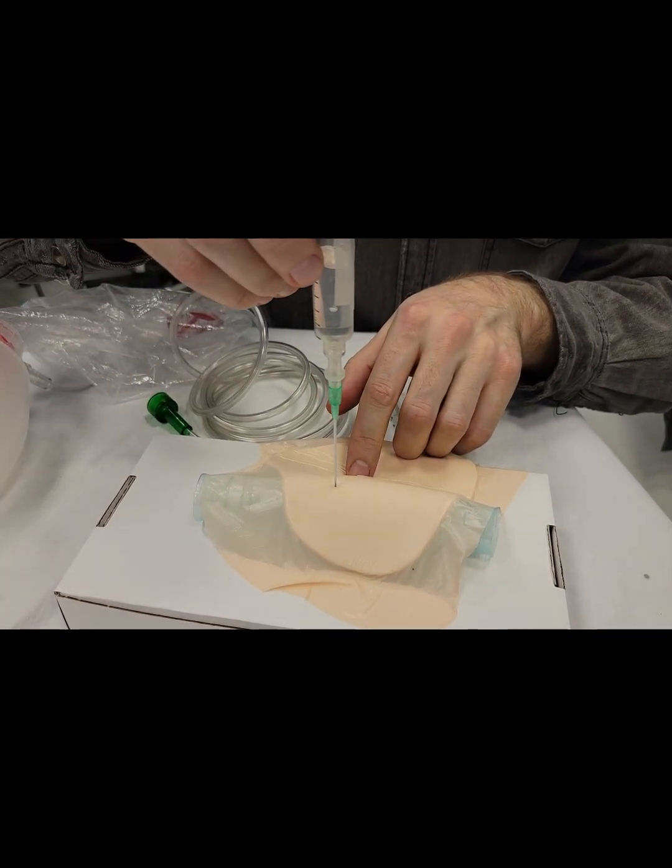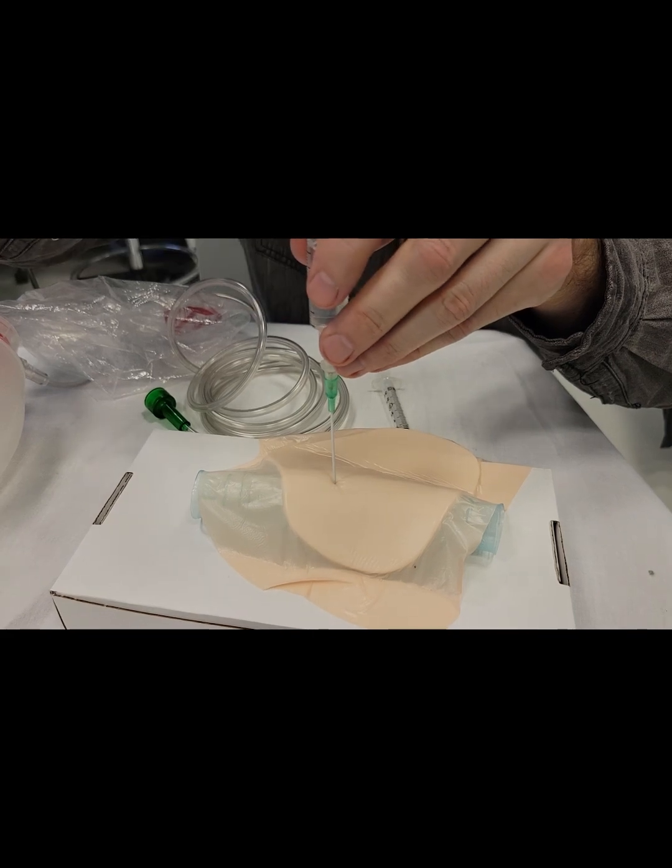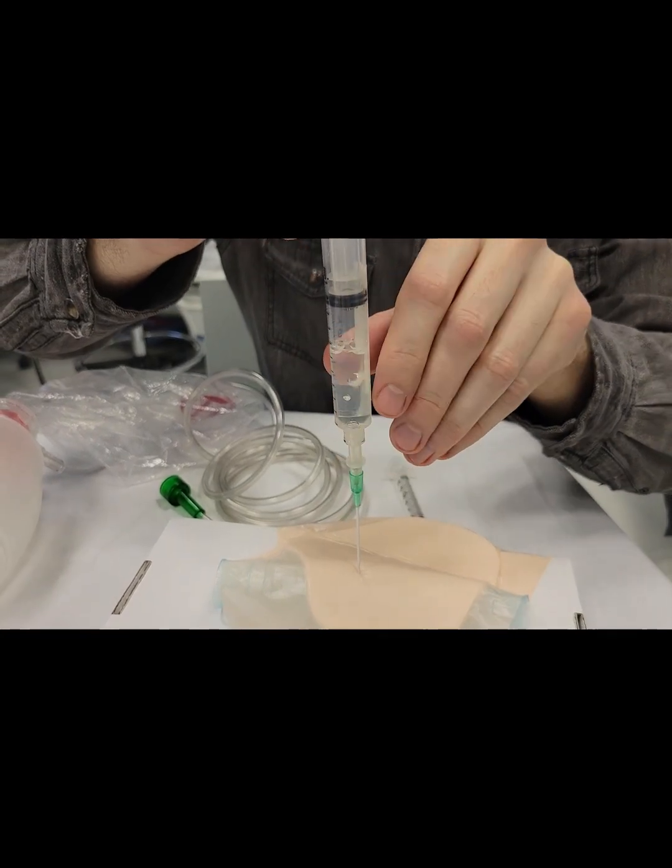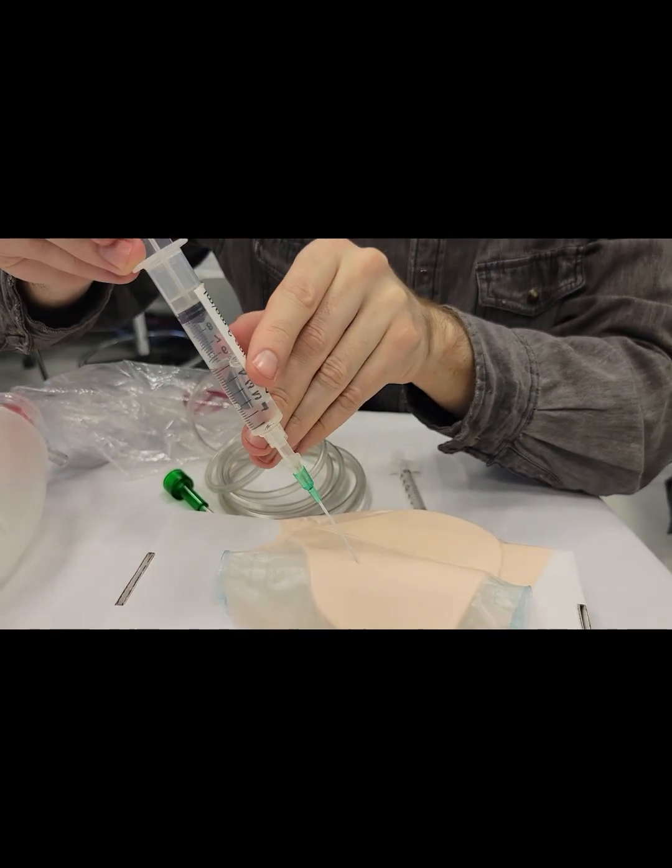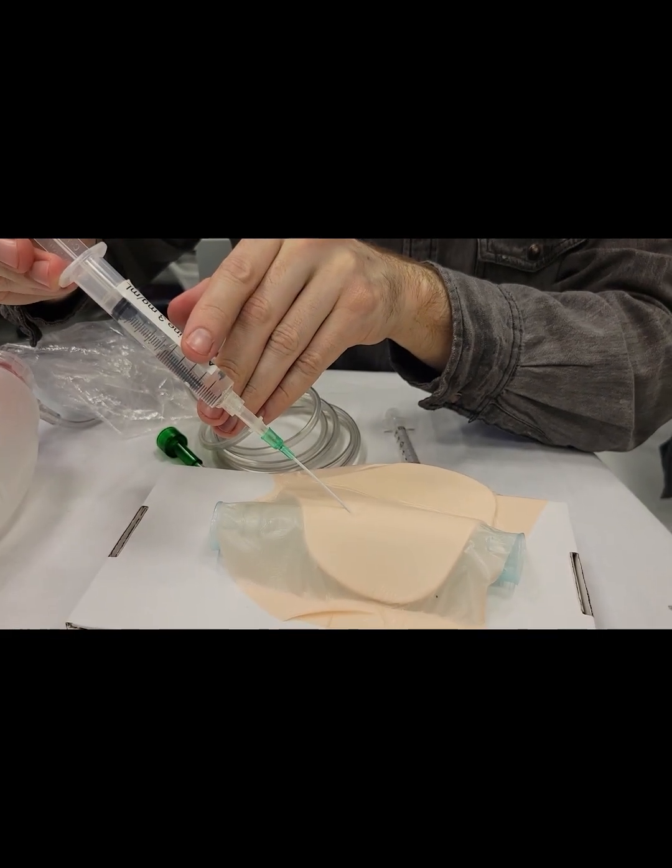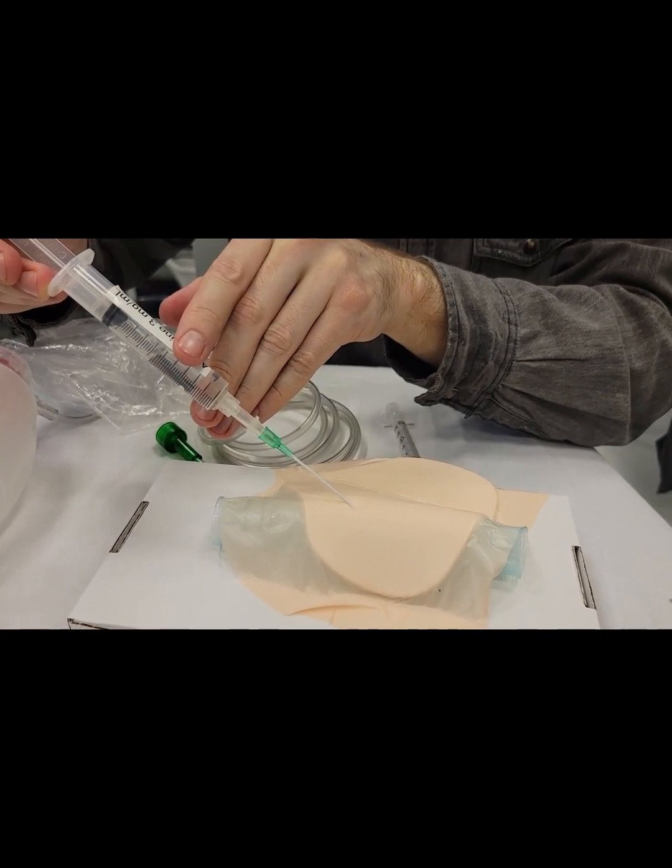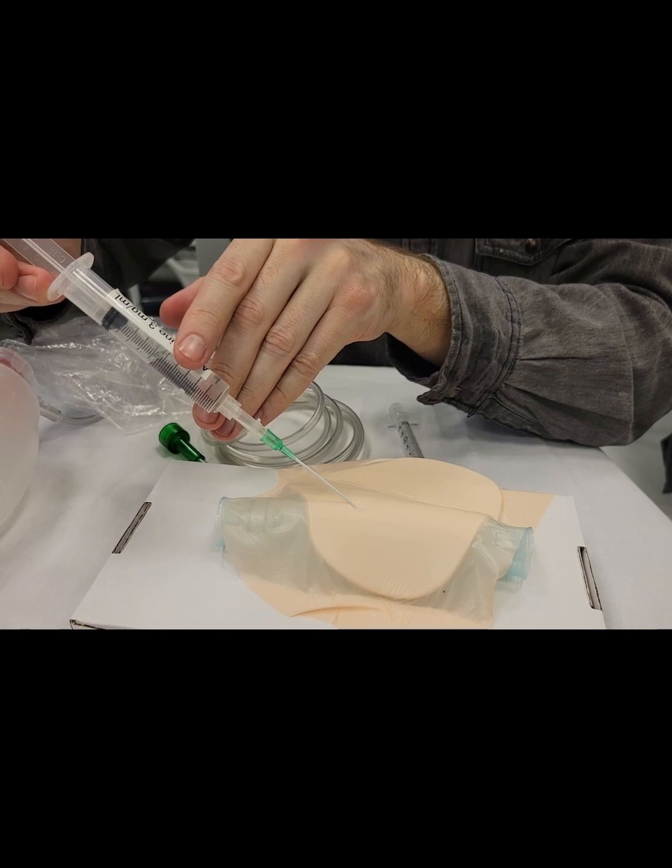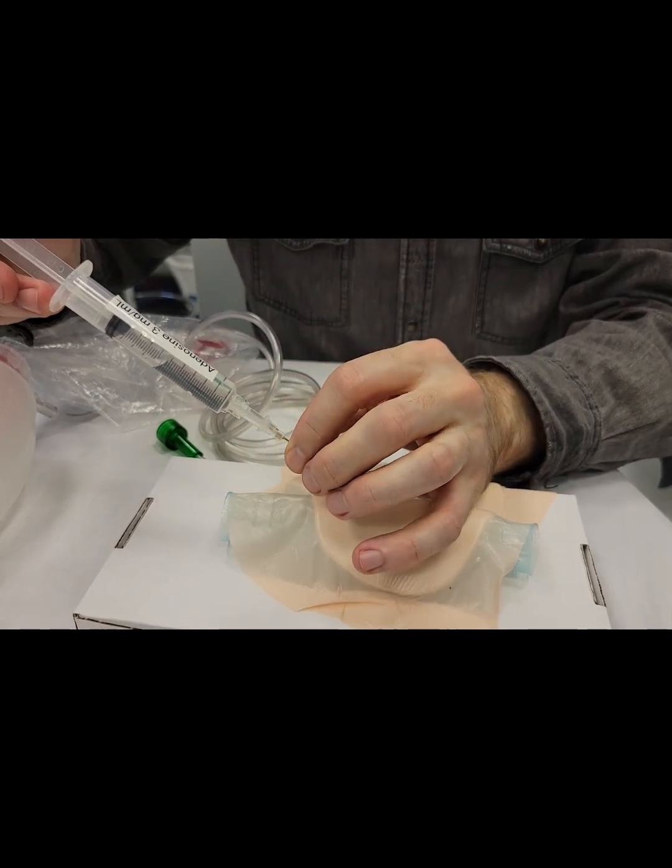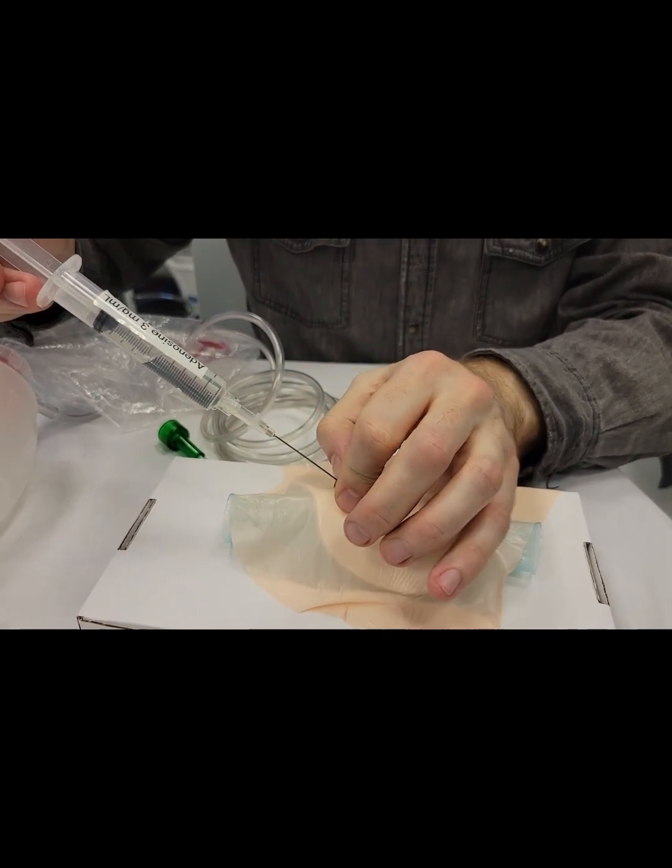Insert the needle first perpendicularly, aspirating as you're going. Once you get bubbles in the syringe, you know you're in the trachea. Tilt the needle 45 degrees towards the feet, advance the angiocath, withdraw the needle.